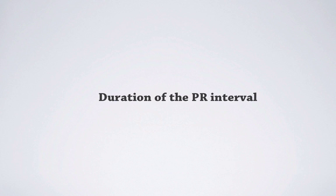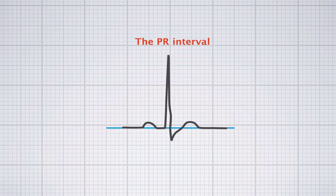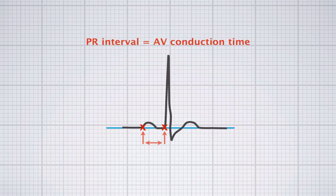Next, let's talk about the duration of the PR interval. The PR interval starts at the beginning of the P wave and ends at the beginning of the QRS complex. It represents the time the atrial depolarization takes to travel through the AV node in order to reach the ventricles, so the PR interval represents AV conduction time. The normal value for the PR interval is 0.12 to 0.2 seconds.